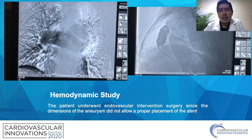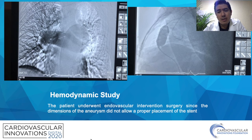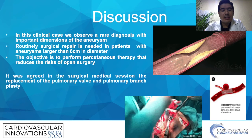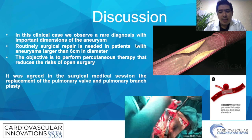The case was discussed and it was decided to conduct a multidisciplinary medical session for treatment planning, including the cardiovascular surgery department. Due to the anatomy of the aneurysm, proper placement of any endovascular therapy was not possible. It was decided in the session that the patient did not qualify for endovascular treatment, since the aneurysm was greater than 6 cm as the literature indicates. It was agreed in the surgical medical session to proceed with replacement of the pulmonary valve and pulmonary branch graft.